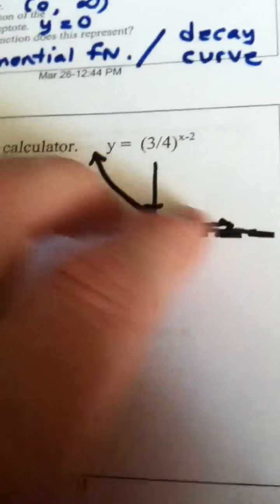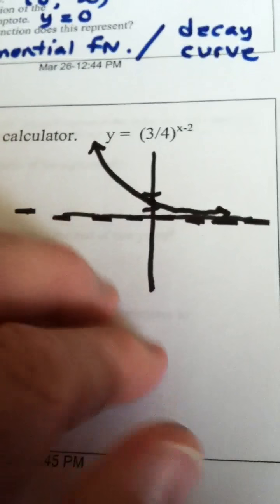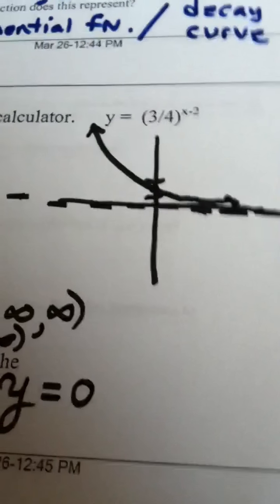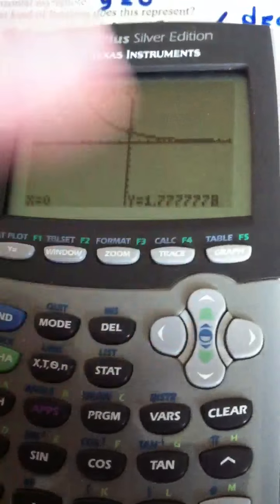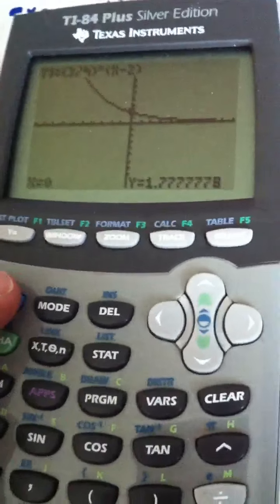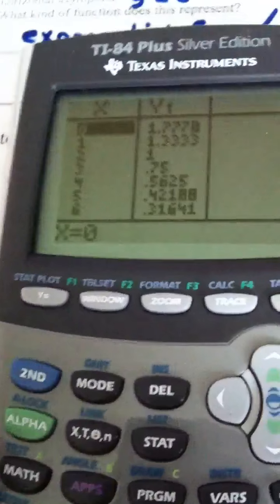sometimes on the final exam they have you do a graph, and then they ask you for a list of ordered pairs that would be on the graph. If this was on the exam and they said, now list some ordered pairs on the graph, I would just go to second function table,